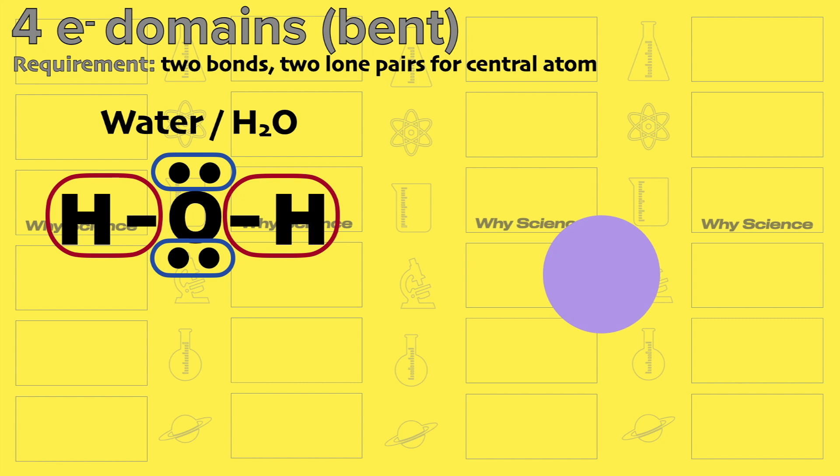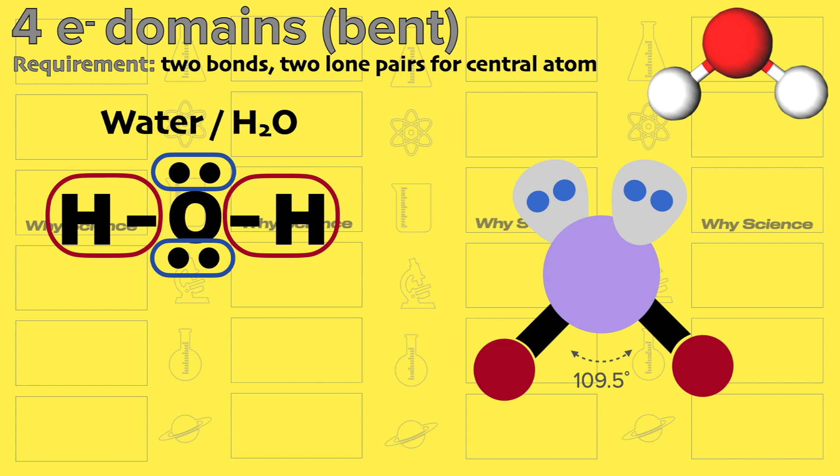Here we have our central atom, oxygen, then put the two hydrogen atoms. Adding the two lone pairs will push the two bonded atoms down. To further visualize this, the molecular geometry looks like this.